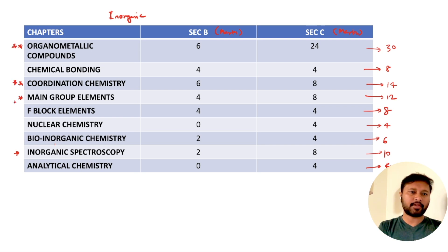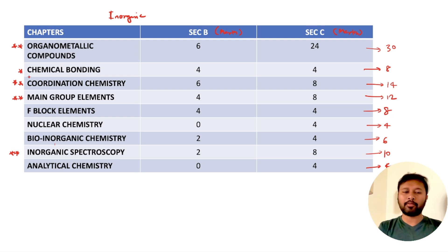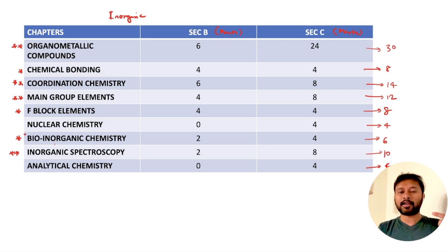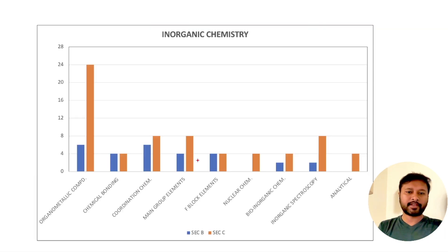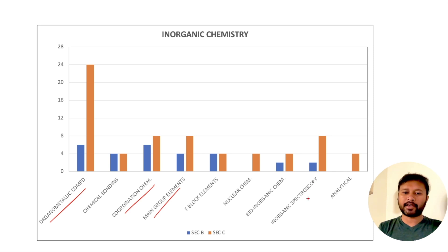The star topics in inorganic chemistry — the ones with the highest weightage — are organometallic compounds, coordination chemistry, main group elements, and inorganic spectroscopy. These are double-star topics you must not miss. Secondary important topics include chemical bonding, f-block elements, and bio-inorganic chemistry, which should be covered after the double-star topics. These secondary topics consistently have at least one question each year.